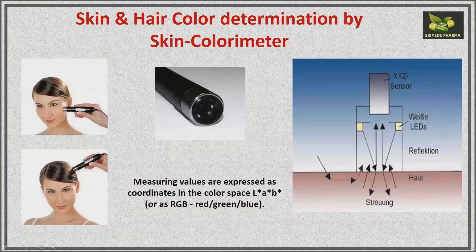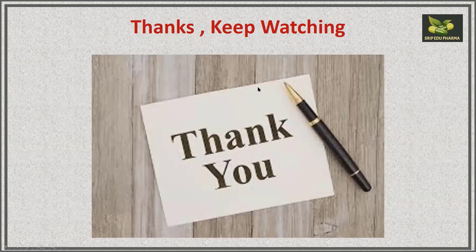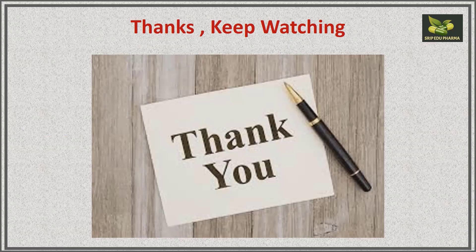Skin and hair color determination by the skin colorimeter gives readings in RGB values using white light. This brings us to the end of Part 1 of the video. In Part 2, we will discuss in detail the principles, advantages, disadvantages, technical specifications, and details of each instrument covered here. Thank you for watching — if you have not subscribed, please subscribe to our channel SRIP Edu Pharma. Keep watching and stay connected.